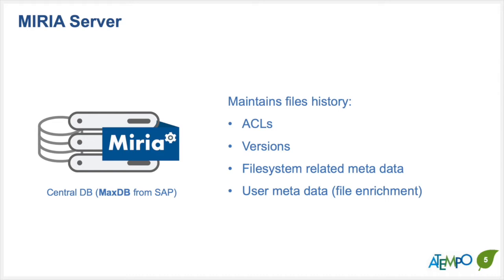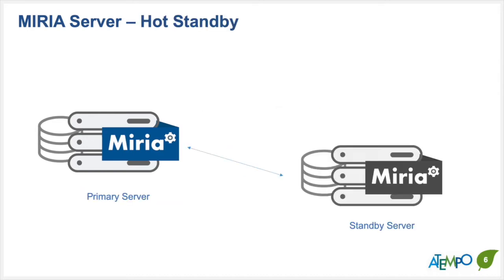You can also configure hot standby, so you can have basically two servers — one waiting should the other fail — connected to this database through either SAS or Fibre Channel via a small external piece of storage. When one system goes down, the other one just picks right up where the other one was functioning, straight from the database.